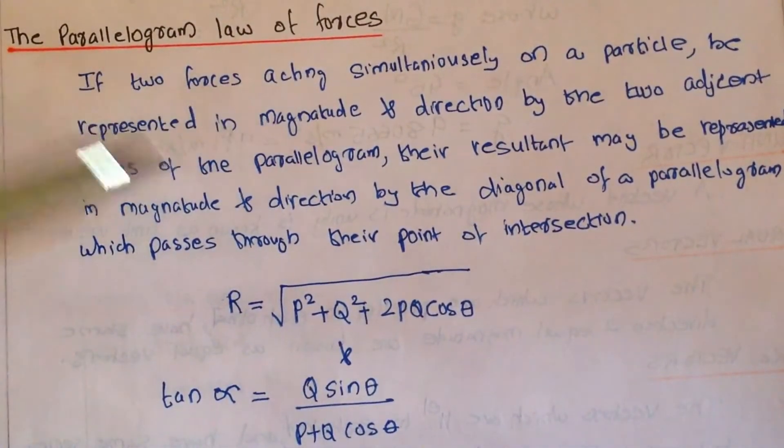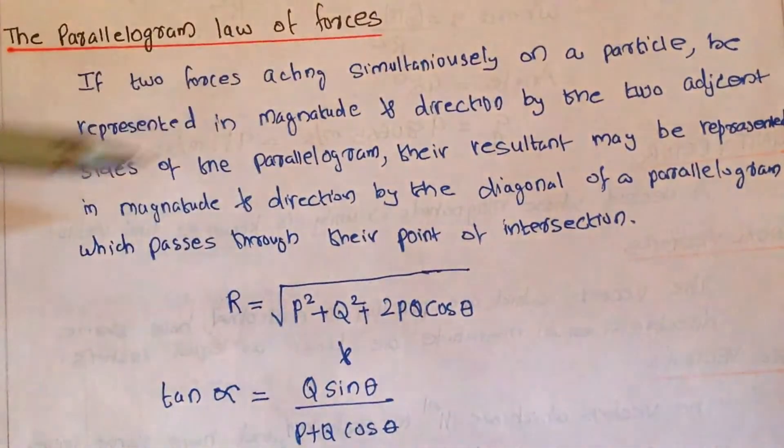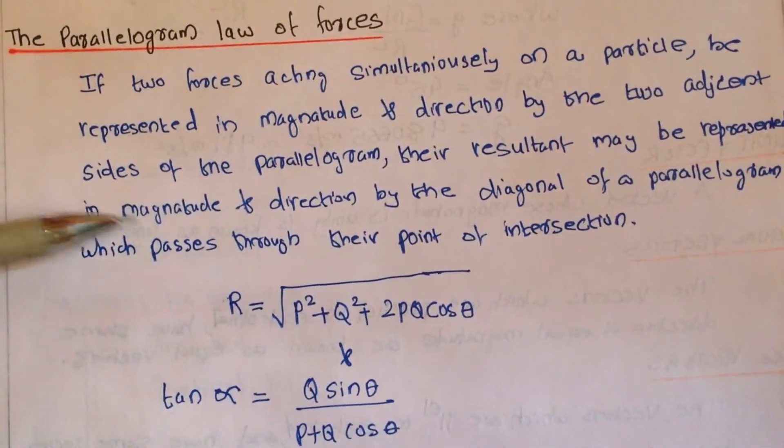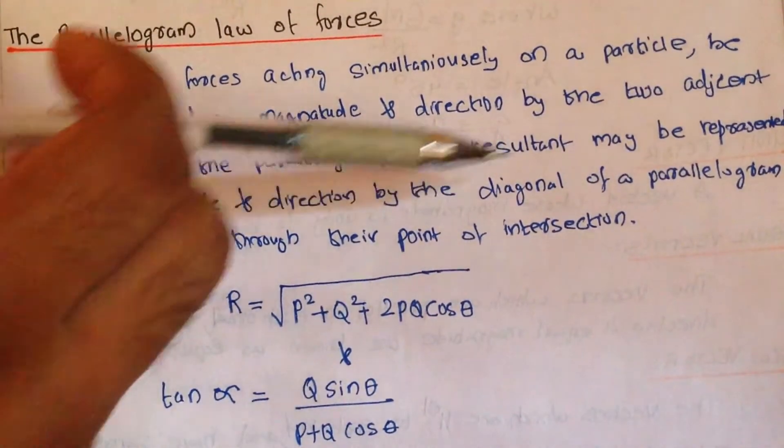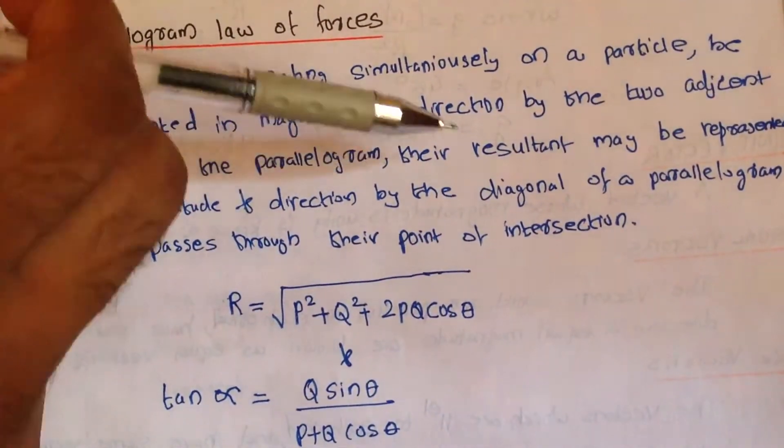Their resultant may be represented in magnitude and direction by the diagonal of the parallelogram, which passes through their point of intersection.